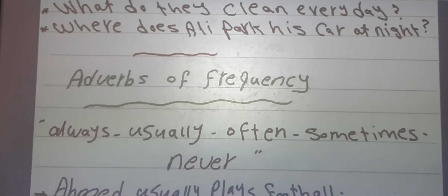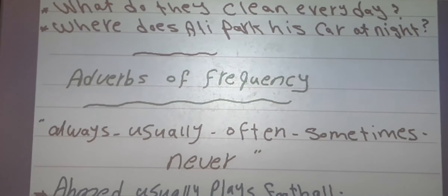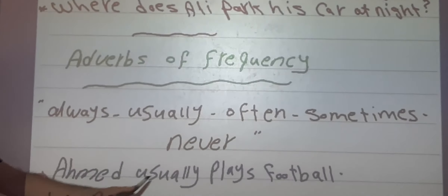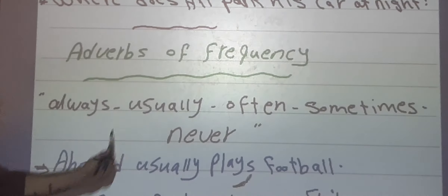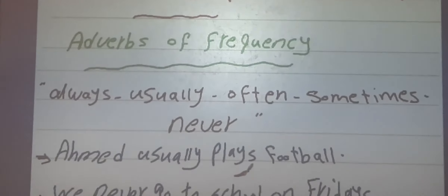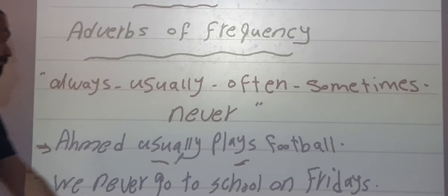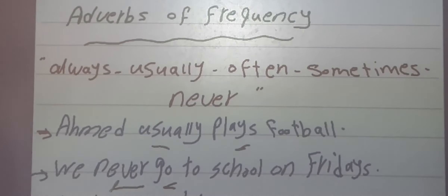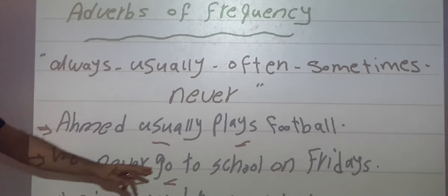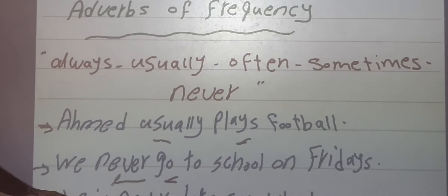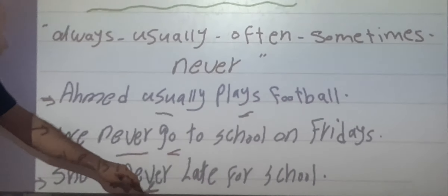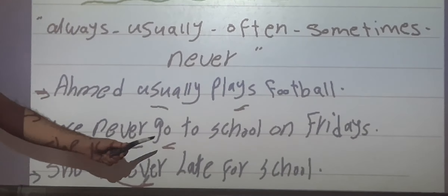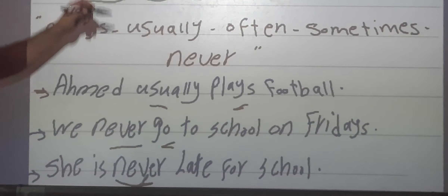Let's talk about adverbs of frequency: usually, always, often, sometimes, never. Number 1: Ali usually plays — the adverb of frequency comes before the main verb. Number 2: We never go to school on Fridays — adverbs of frequency come before the main verb and after the verb to be. For example: She's never late.